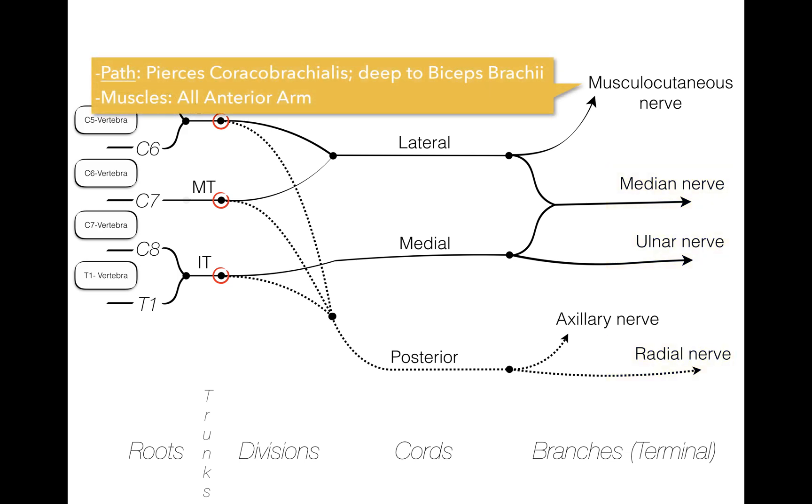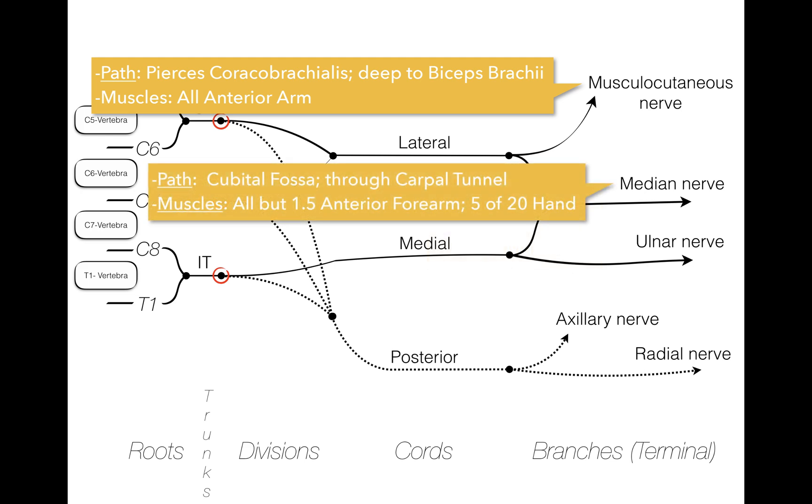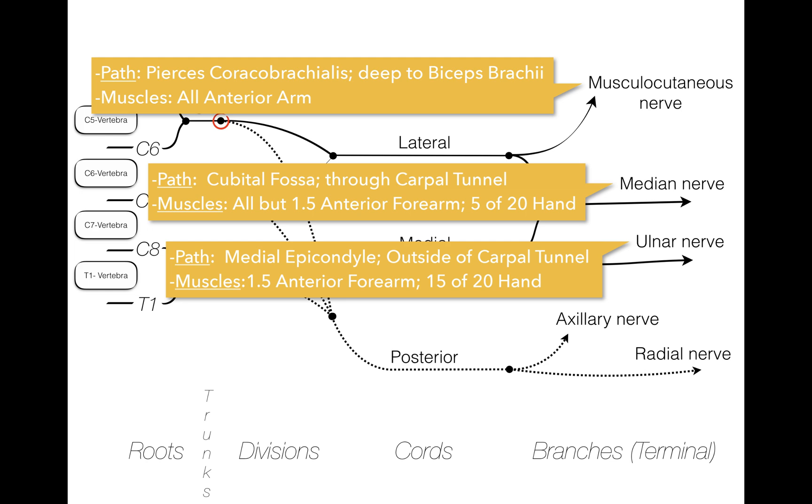The musculocutaneous nerve innervates the anterior arm muscles. It pierces the coracobrachialis muscle and travels deep to biceps brachii of the anterior arm compartment. The median and ulnar nerves share the task of innervating the anterior forearm muscles and the muscles of the hand. The median nerve can be said to innervate all but one and a half of the anterior forearm, but only five of twenty muscles of the hand. The ulnar nerve innervates the remaining one and a half muscles of the forearm and the fifteen of twenty muscles of the hand.